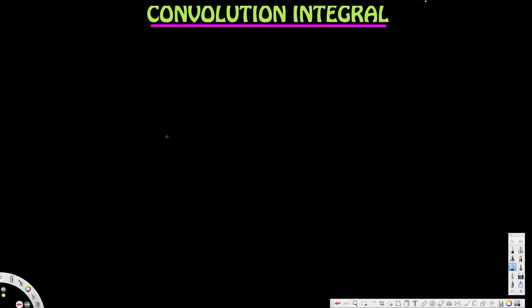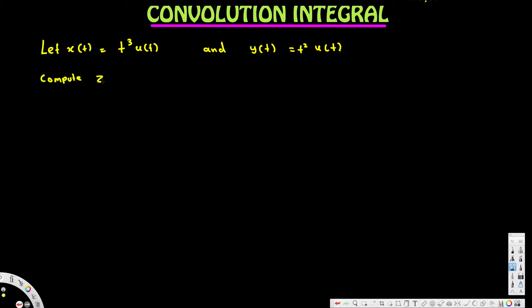In this video we are going to see an example of convolution integral, particularly an example of two polynomial functions convolved with each other. We have x of t equal to t cubed u of t, and y of t equal to t squared u of t. The question asks us to compute z of t, which is x of t convolved with y of t.